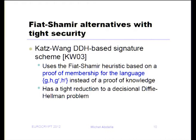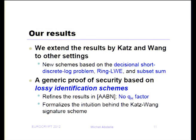In this work, we extend their results to other settings. In particular, we show new schemes based on the decisional short discrete log problem, ring LWE, and subset sum. All of these schemes are quite simple, and to prove them, we give a generic proof which formalizes the intuition behind the Katz-Wang signature. For that, we propose a notion of lossy identification scheme. Our result is generic — it applies to the Fiat-Shamir transform — and there is no Q_H factor loss in the reduction.